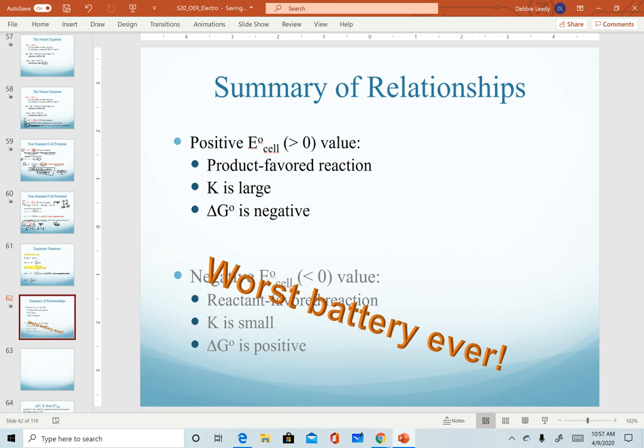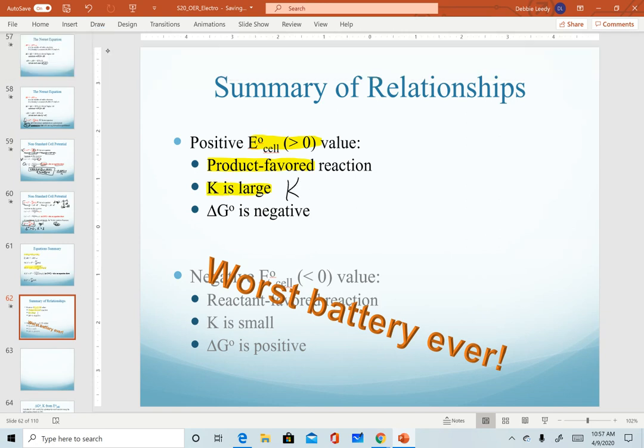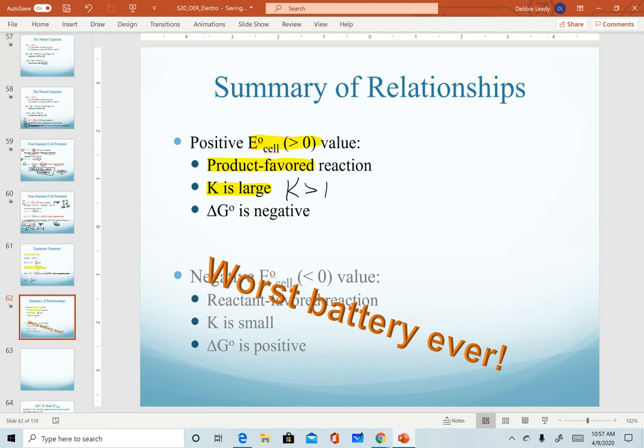Last slide to show in here is to illustrate the relative relationships between quantities. So when we calculate a positive cell potential, positive standard cell potential, that tells us we have a product favored reaction. That means we have a large K value, specifically K is greater than one. And in that type of scenario, it means that we would get a negative delta G. I do encourage you to know these relationships so that as you're performing calculations, you can double check that your answer makes sense, particularly noting signs, positives versus negatives.